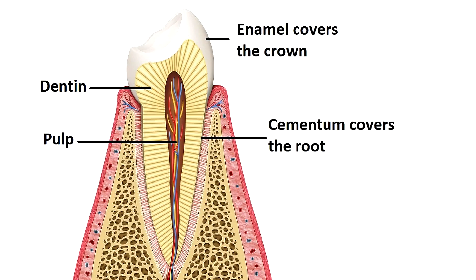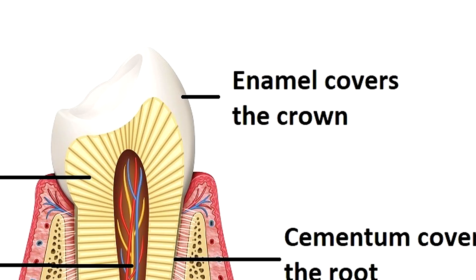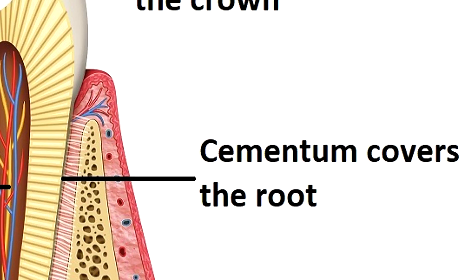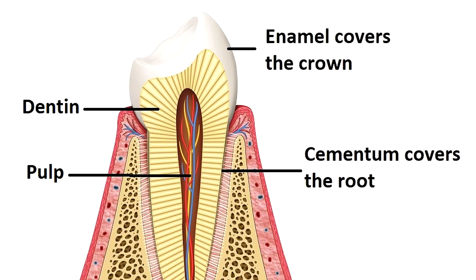And just as the crown is covered in a protective layer of enamel, the root is covered in its own protective layer called cementum, which covers the dentin and its underlying root canal and pulp.